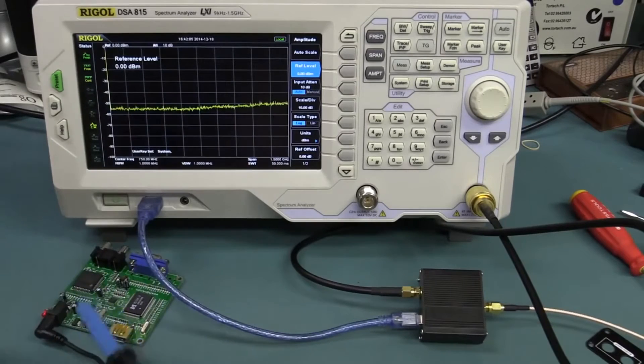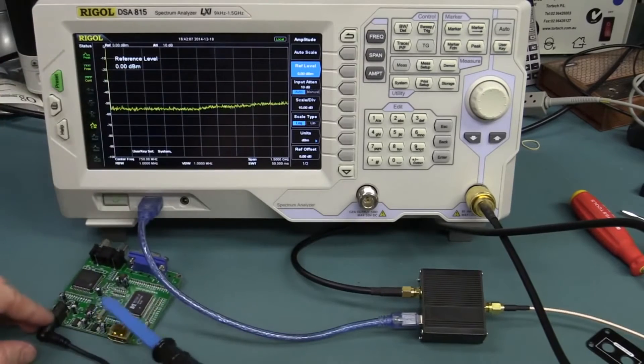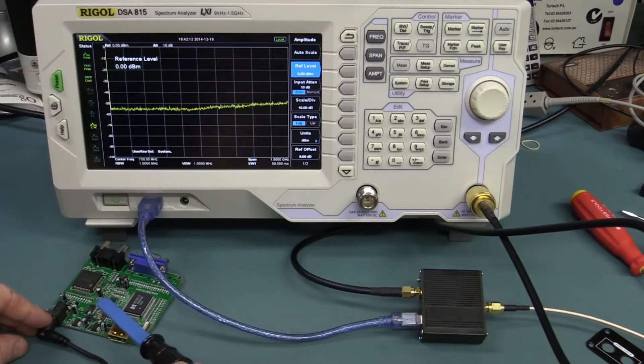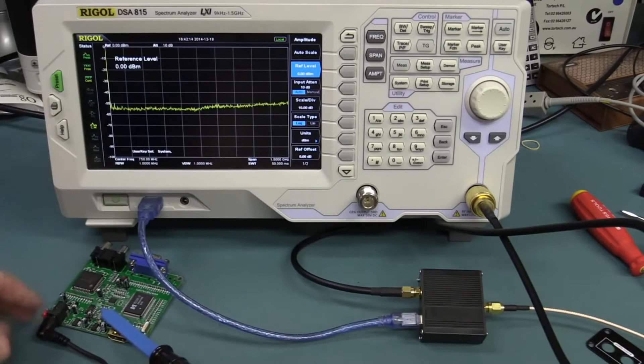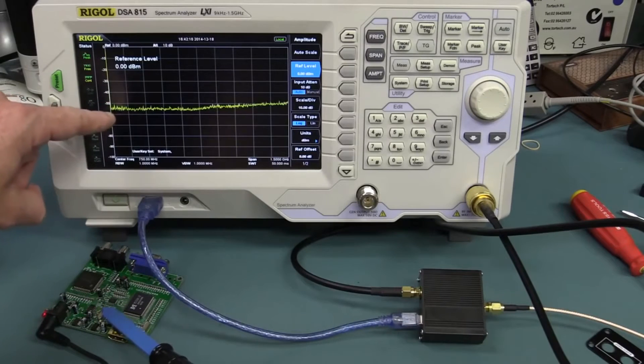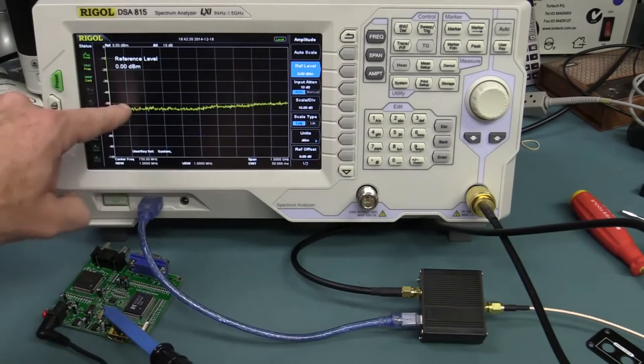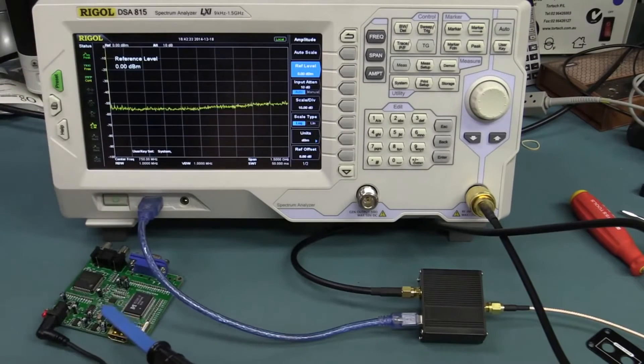And we can probe over that. I've got the full span here. And we're probably not going to see a huge amount. Get over the crystal there. Yeah, there's something happening down at the low end, as you'd expect. So let's—I mean, this is over the full 1.5 gig—let's go down to the low end and see what's happening down there.